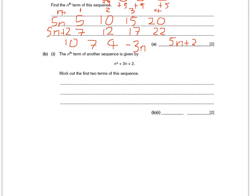Part B says the nth term of another sequence is given by n squared plus 3n plus 2. And we're asked to find the first two terms of this sequence. If we're finding the first two terms, that means we're going to put in the value of 1 where n is. To get the first term and get the second term, we're going to put in the value 2.